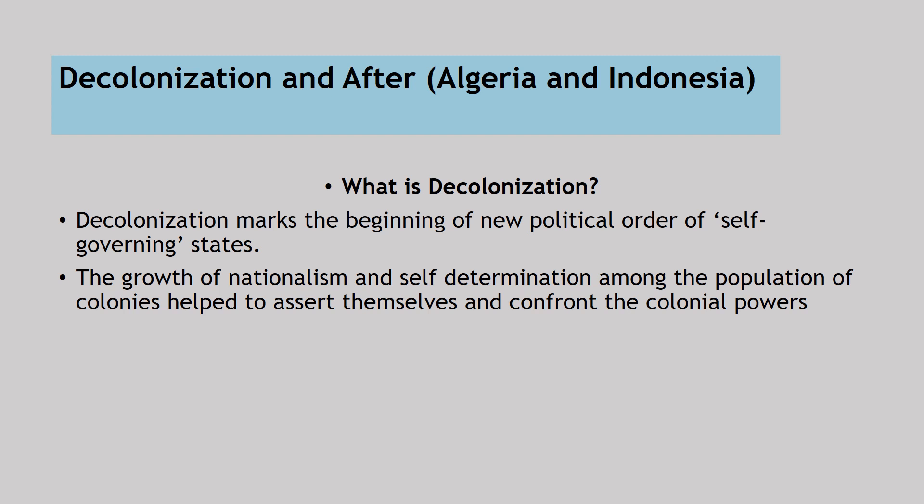What is decolonization? Decolonization marks the beginning of a new political order of self-governing states. The word decolonization first appeared in 1836. Decolonization means having one's own rule — self-governing governments. From the internal viewpoint, bad decision-making, suppression, and gross exploitation on the part of colonial powers contributed towards the decline of colonial rule. Suppressing and exploiting indigenous people was the basic reason why native people thought about decolonization. The growth of nationalism, patriotism and self-determination among the population of colonies helped them to assert themselves and confront and fight the colonial powers.